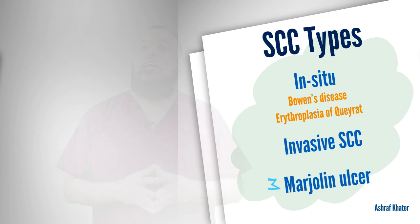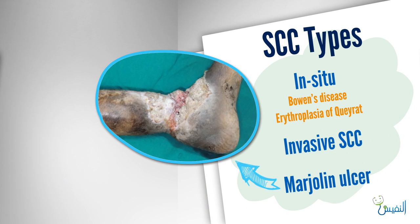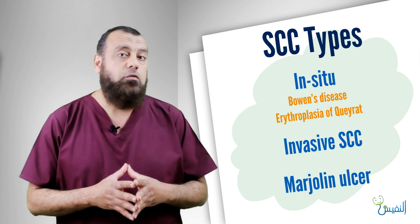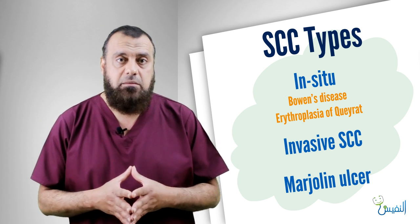What about the Marjolin's ulcer? This is a photo of the Marjolin's ulcer. It is a squamous cell carcinoma on top of a scar. The commonest scar is the burn scar. There is ulceration on top with a classic squamous cell carcinoma ulcer on top of a burn, or maybe other scars.